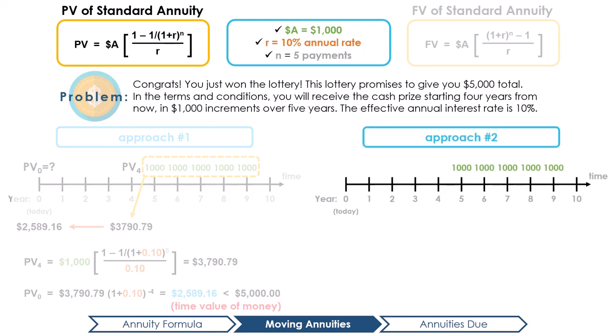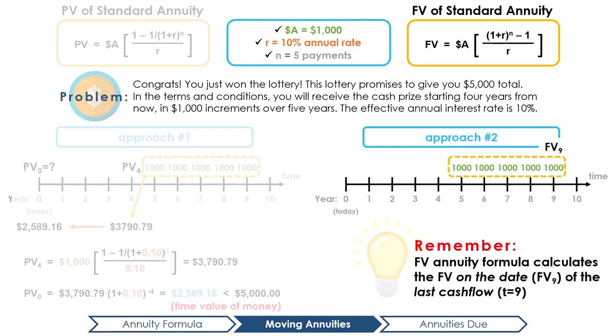Another way that we could have tackled the same problem is to calculate what the future value of the payments were at the nine-year mark using the future value of an annuity formula. Here, it's important to remember that the FV of an annuity formula calculates the FV on the date of the last payment. Pause here and calculate the FV at time 9 for yourself.